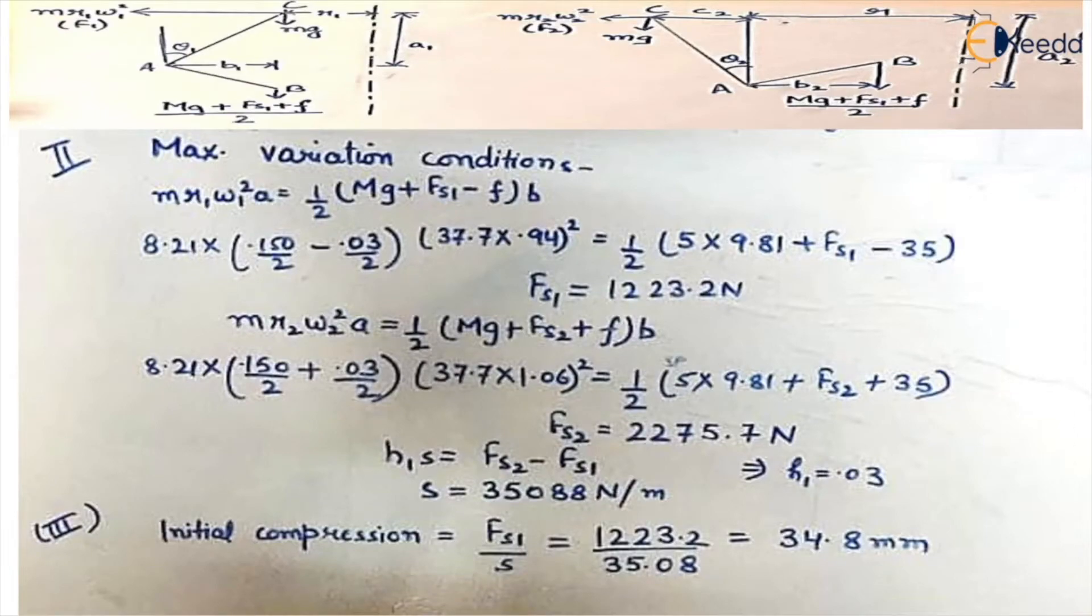You can also make the diagram for reference. For minimum speed, the friction is negative, and for maximum speed, friction is positive.